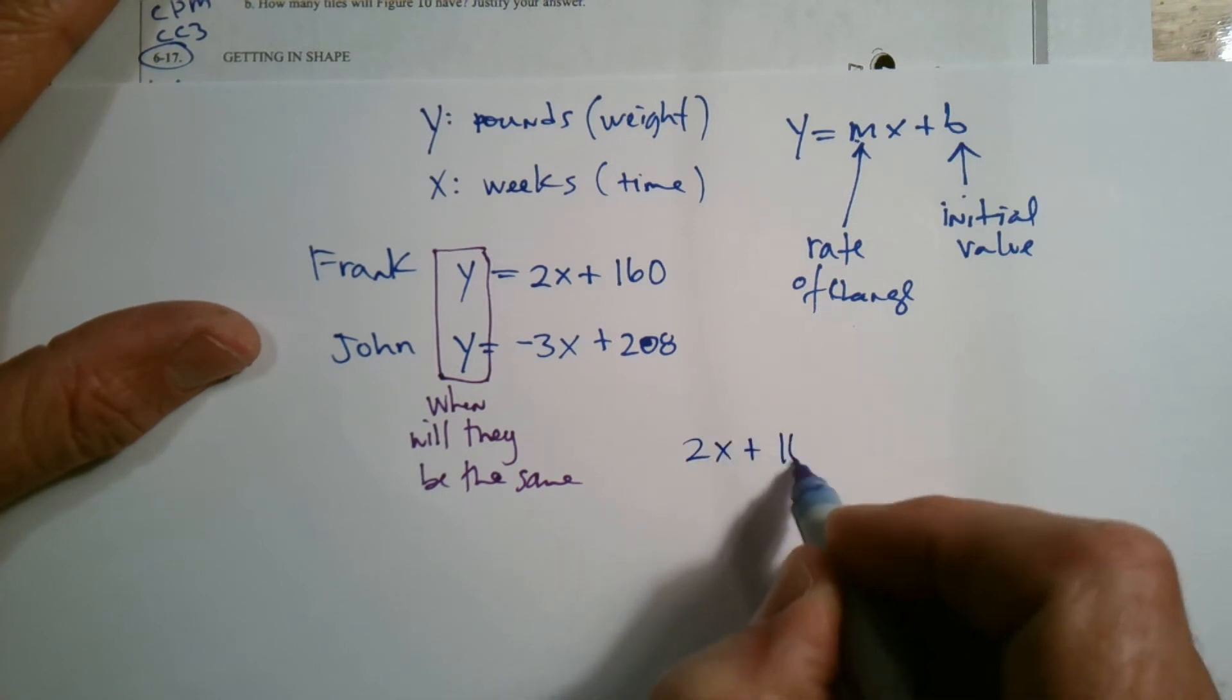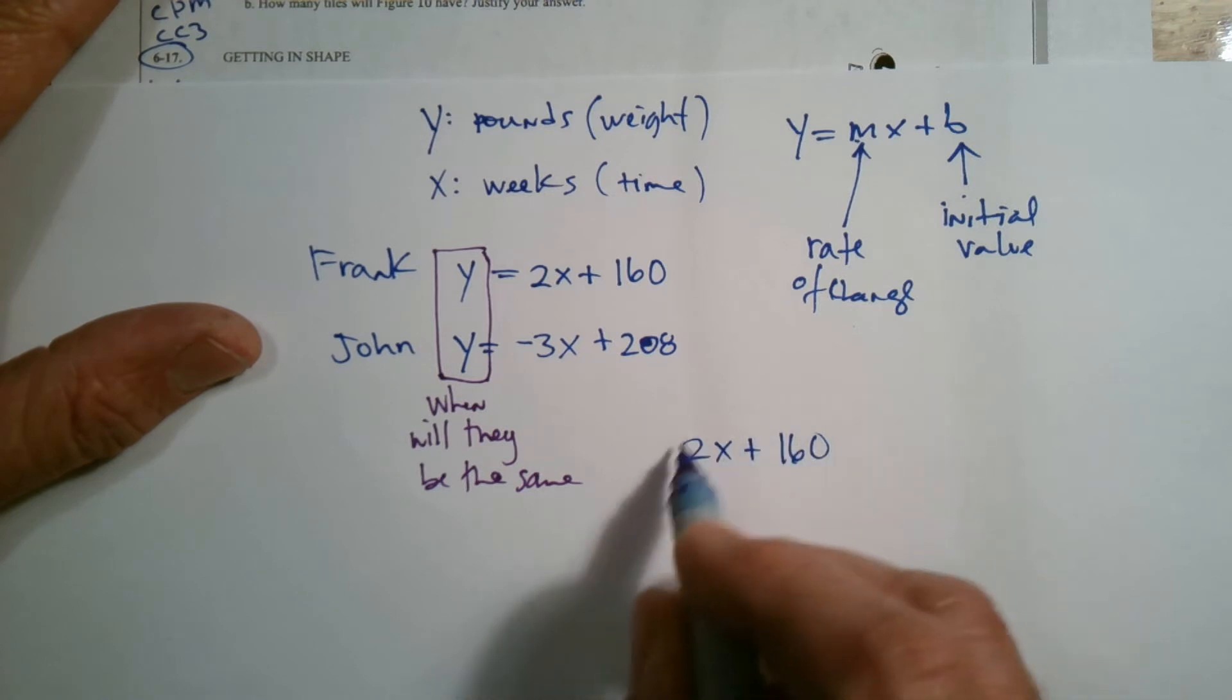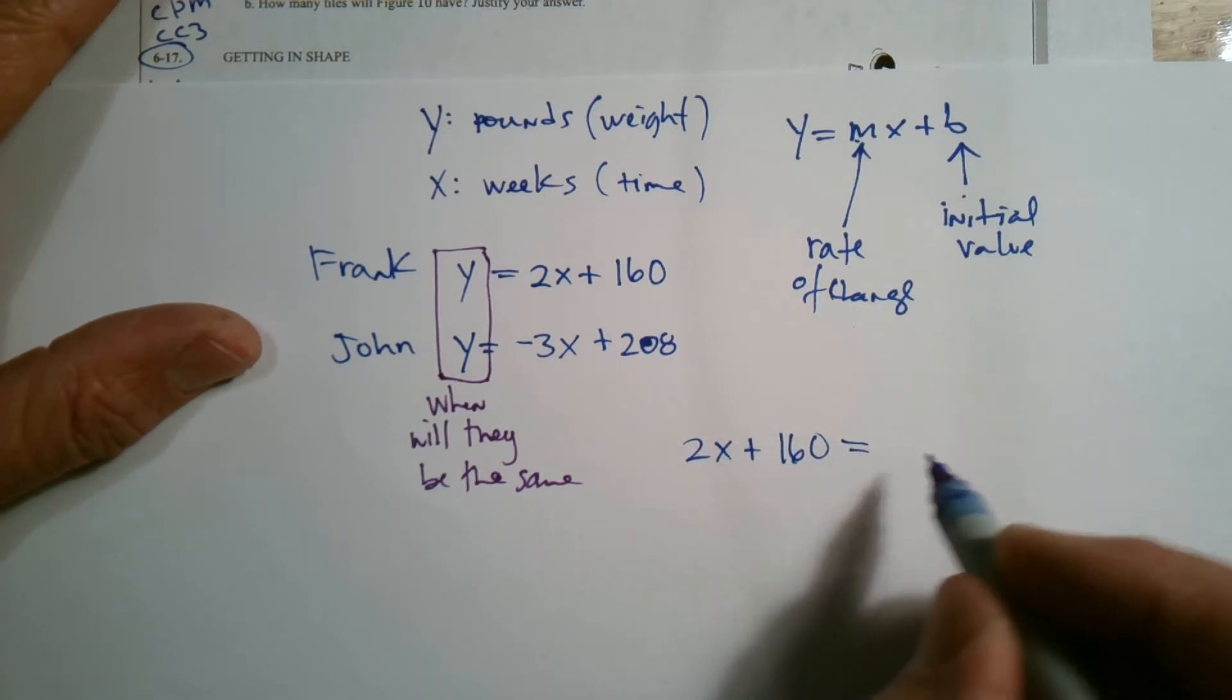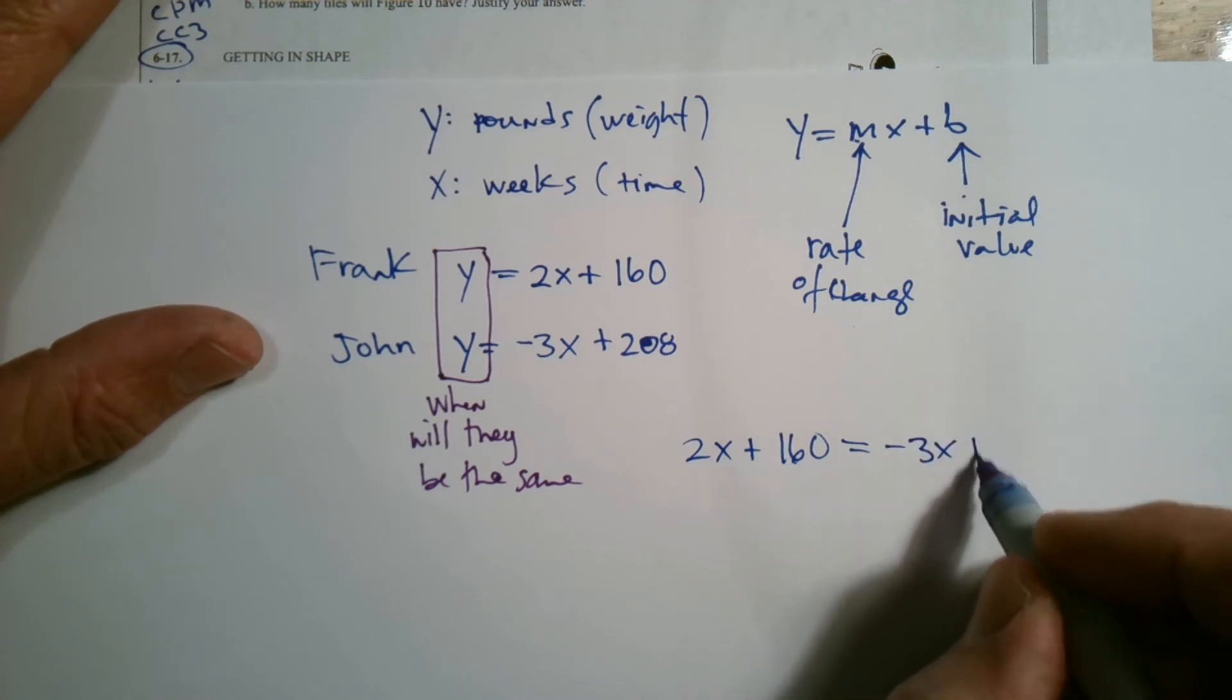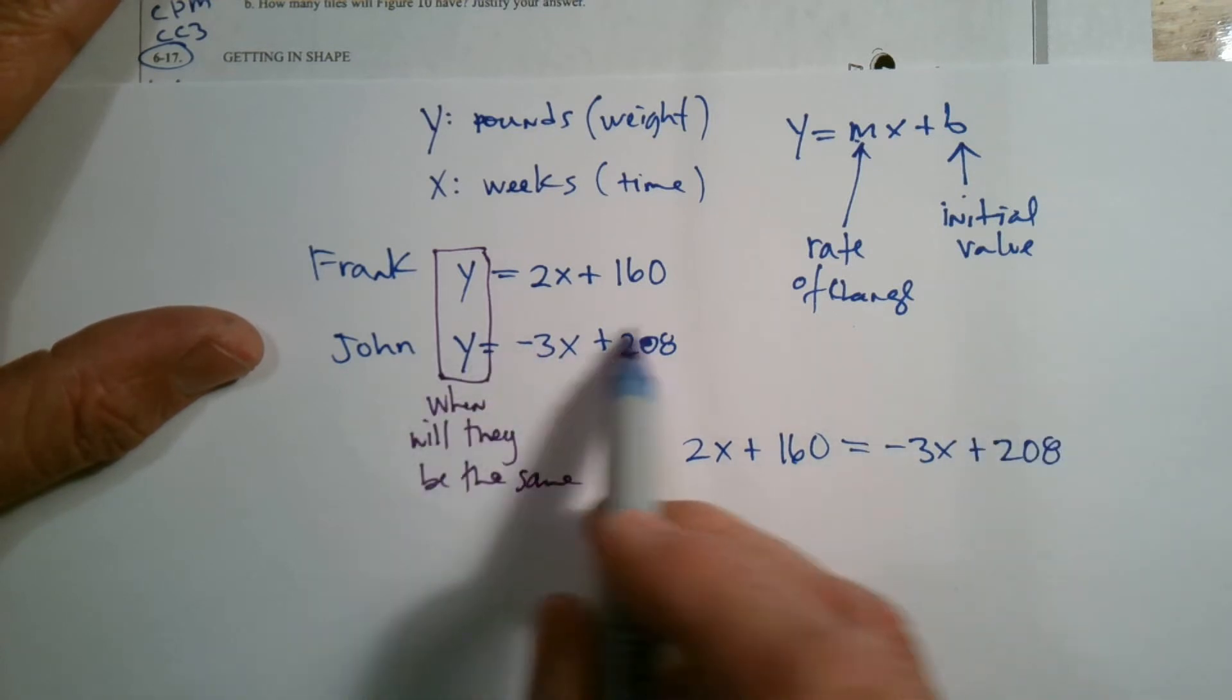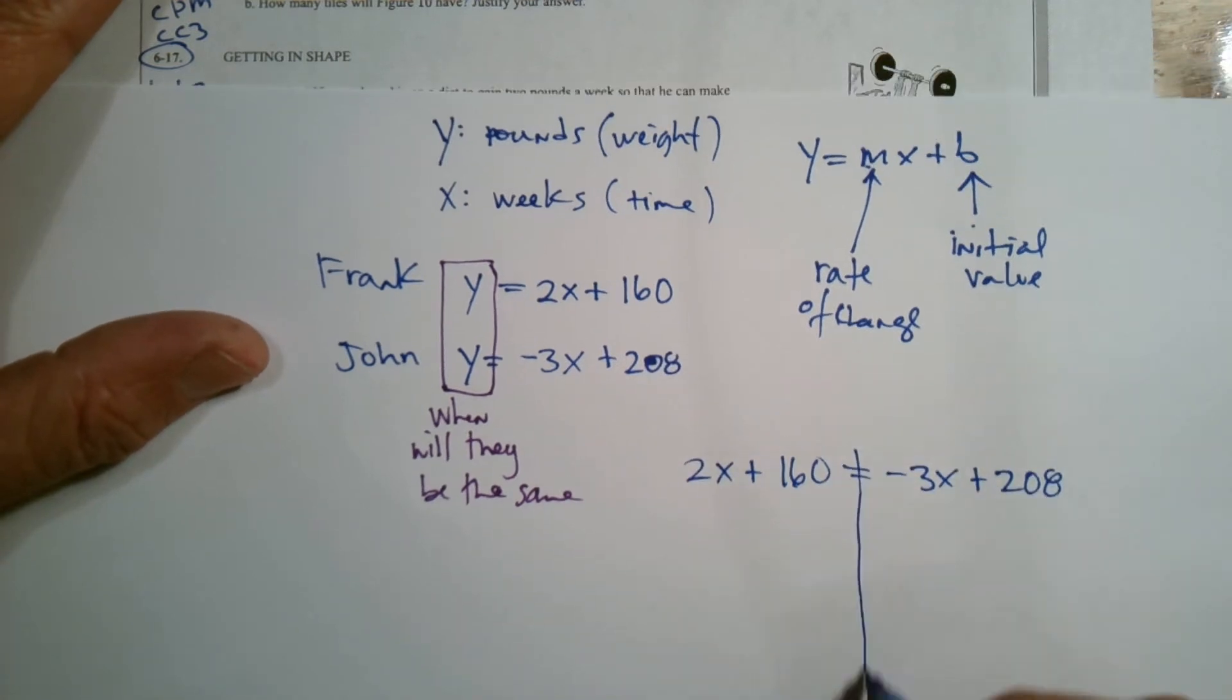So I can write the equation. Well, two X, this is Frank's weight at any time. So what I want to know is when will Frank's weight be equal to John's weight? And this expression here is John's weight at any time. So now I set them equal to each other and solve for X.